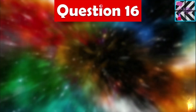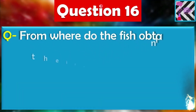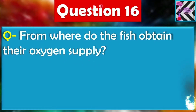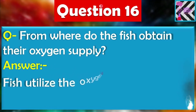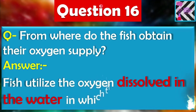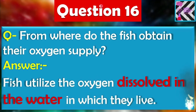Question number sixteen: From where do fish obtain their oxygen supply? Fish utilize the oxygen dissolved in the water in which they live. Since fish don't have a nose, they use gills, and whatever oxygen is dissolved into the water gets utilized by the fish and all aquatic creatures.